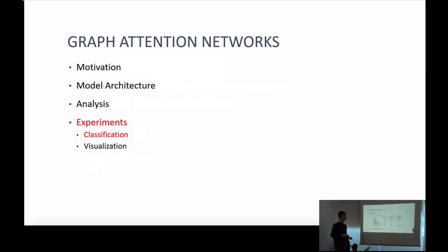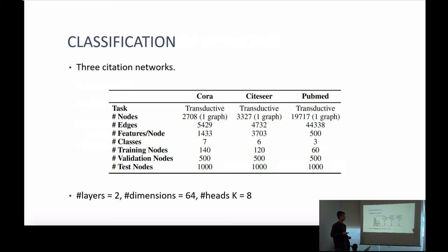For experiments, we use three citation network datasets: Cora, Citeseer, and PubMed. Each dataset has node features (bag-of-words over vocabulary), node labels (multiple classes), and splits for training, validation, and test nodes. The hyperparameter settings are: two layers, representation dimension of 64, and 8 attention heads for multi-head attention. The model of this paper achieves very good classification accuracy across all three datasets.